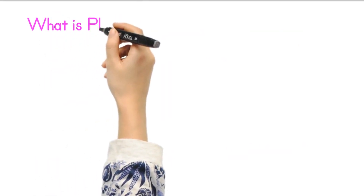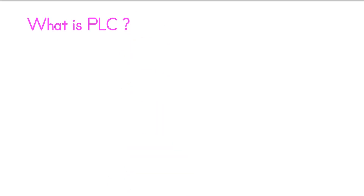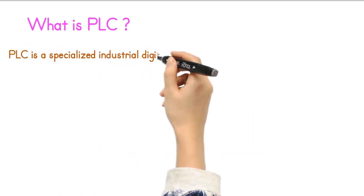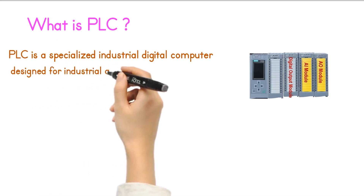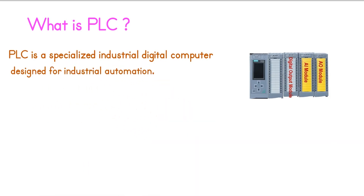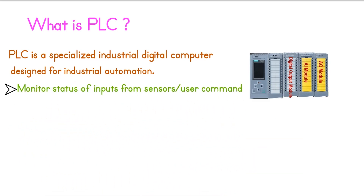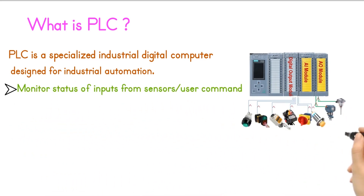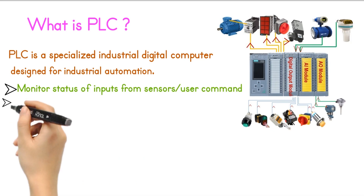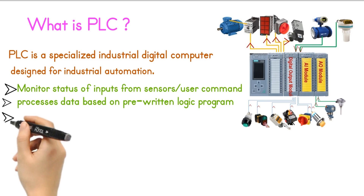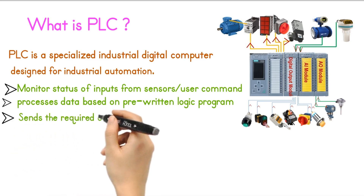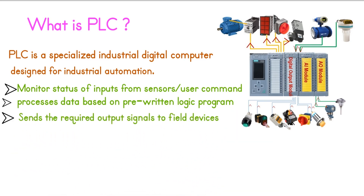What is a PLC and how does it work? PLC is a specialized industrial digital computer designed for industrial automation. It continuously monitors the status of inputs from sensors or user commands, processes the data based on a pre-written logic in programming, and sends the required output signals to field devices like actuators, motors, or other control devices.